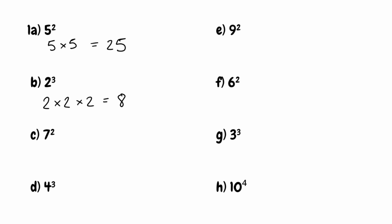For part c, we've got 7 squared. We've got a base of 7 and we're multiplying it by itself twice — 7 multiplied by 7 — which gives us 49. For part d, we've got 4 cubed: 4 multiplied by 4 multiplied by 4. 4 times 4 is 16, and then multiplying that by 4 again gives us 64.